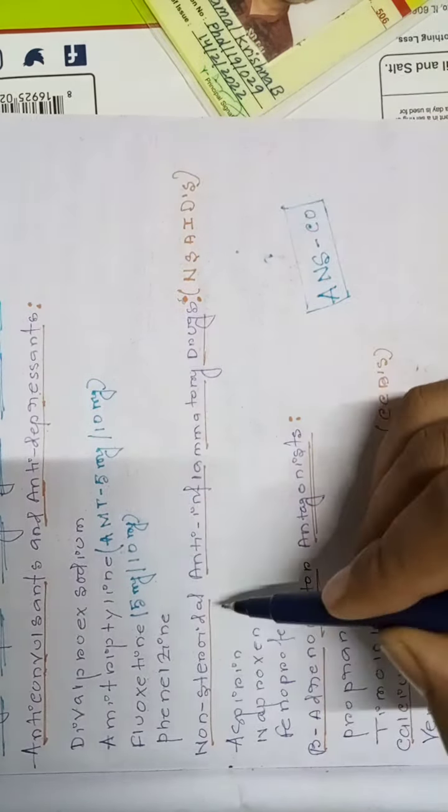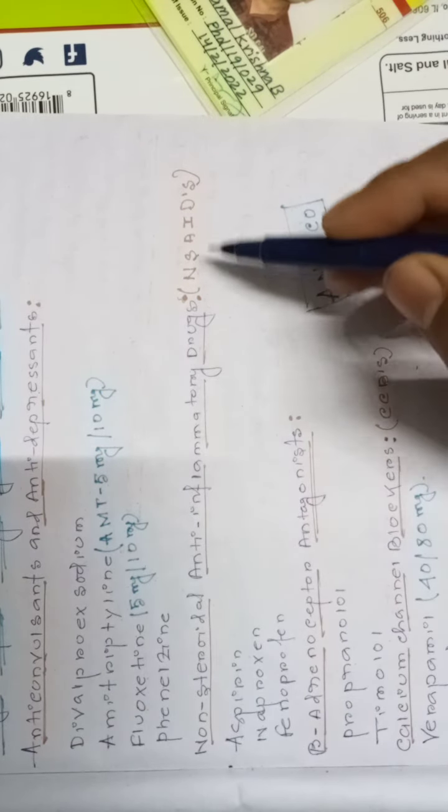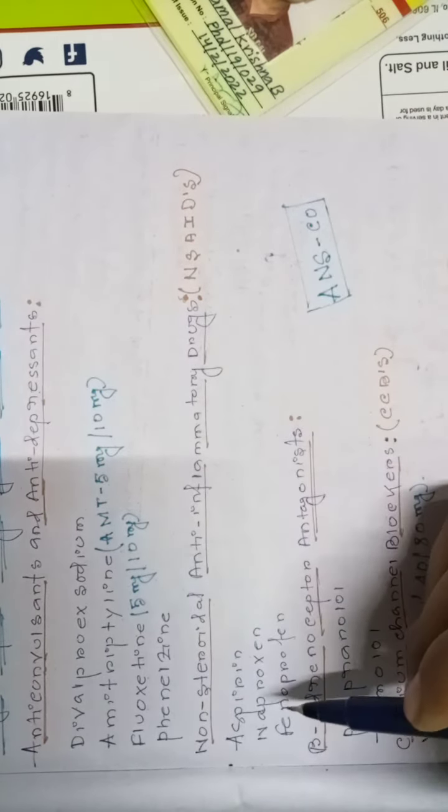Second class of drug for migraine headache is non-steroidal anti-inflammatory drugs, the NSAIDs.